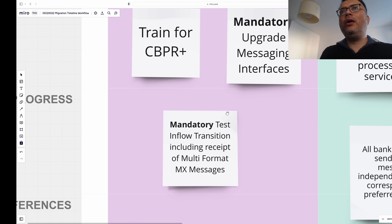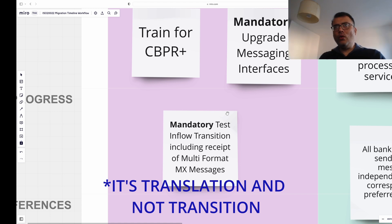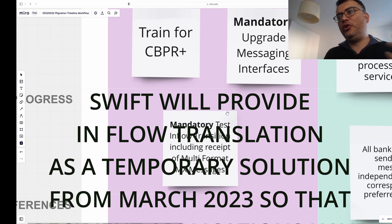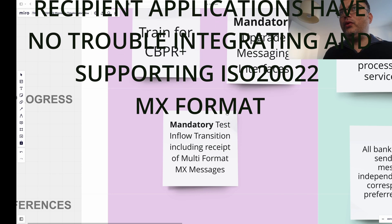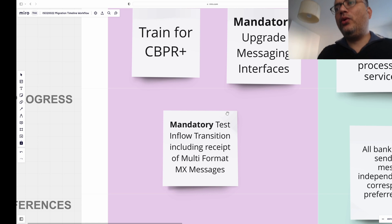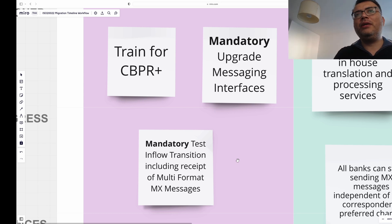Another mandatory step is testing the inflow transition, including receipt of multi-format MX messages. I'll put a link in the description so you can understand the questions around inflow transition — these are essentially FAQs you can also visit on the Swift website. In terms of multi-format, we're now talking about two formats: the MT message format and the MX message format.